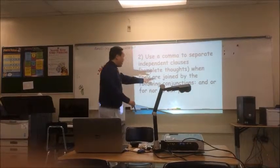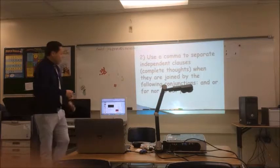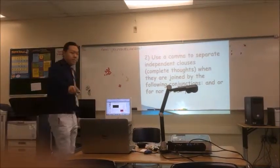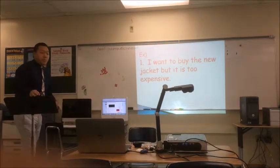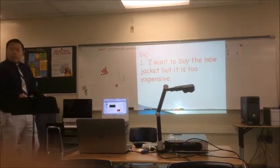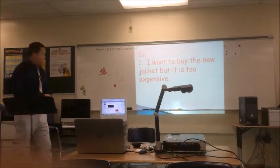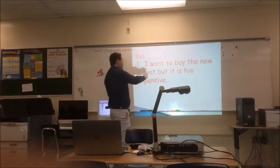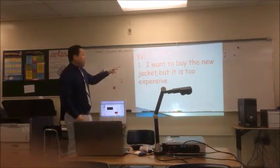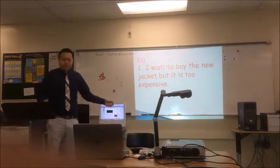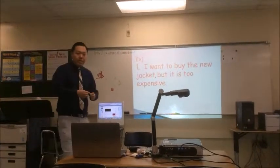So you guys know what conjunctions are, right? It's just these words: and, or, for, nor, so, but, yet. Let's see an example: I want to buy the new jacket, but it is too expensive. Where would you put the comma? After jacket. And do you know why? Because but is the conjunction. Right — and because 'I want to buy the new jacket' is a sentence on its own, and 'it is too expensive' is also a sentence on its own. Because the word 'but' is there, you put a comma instead of a period.